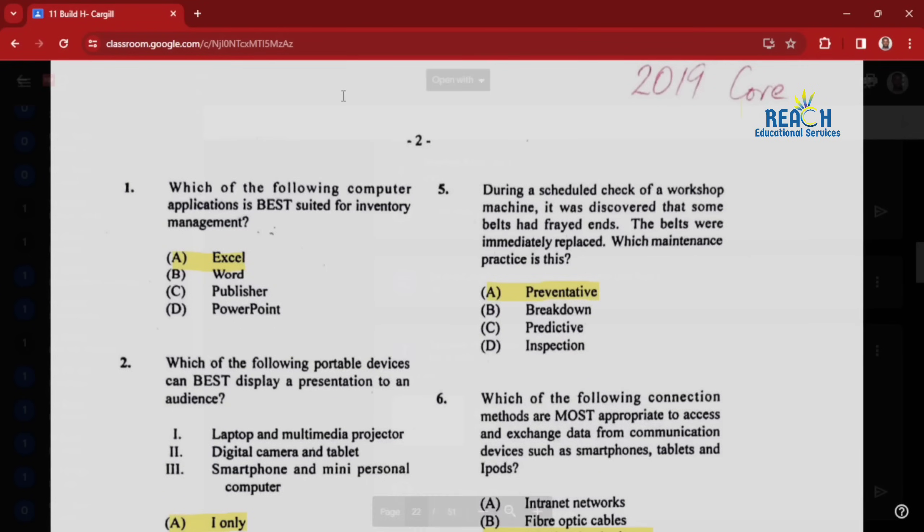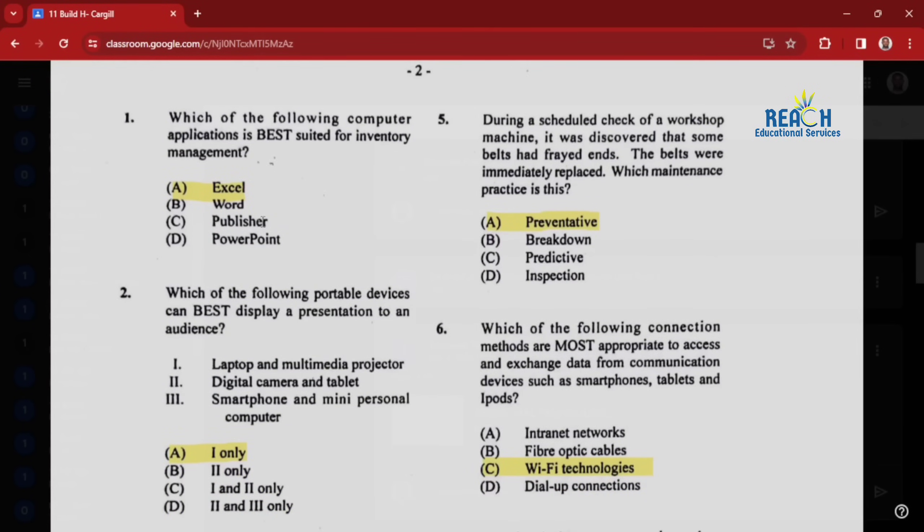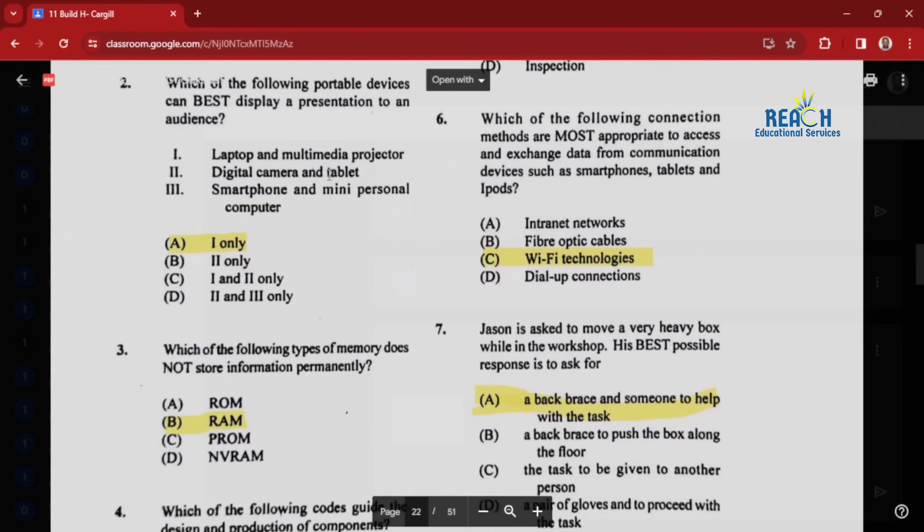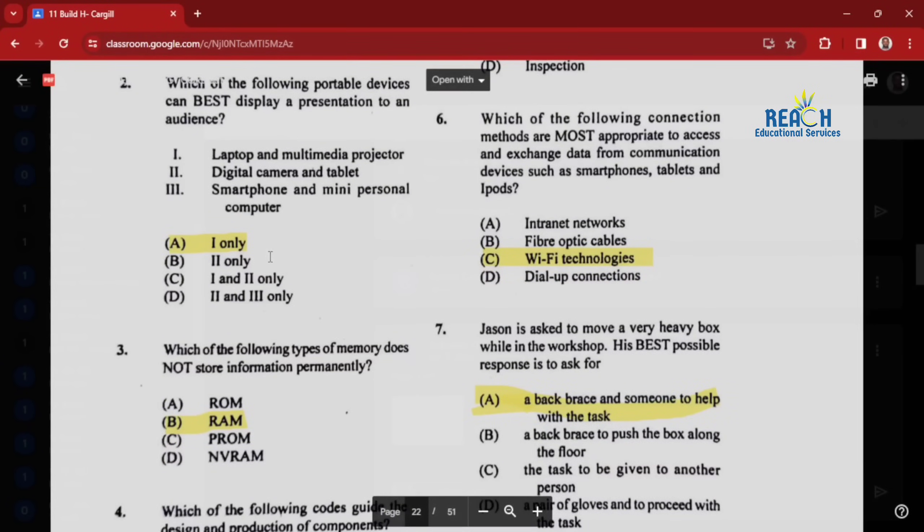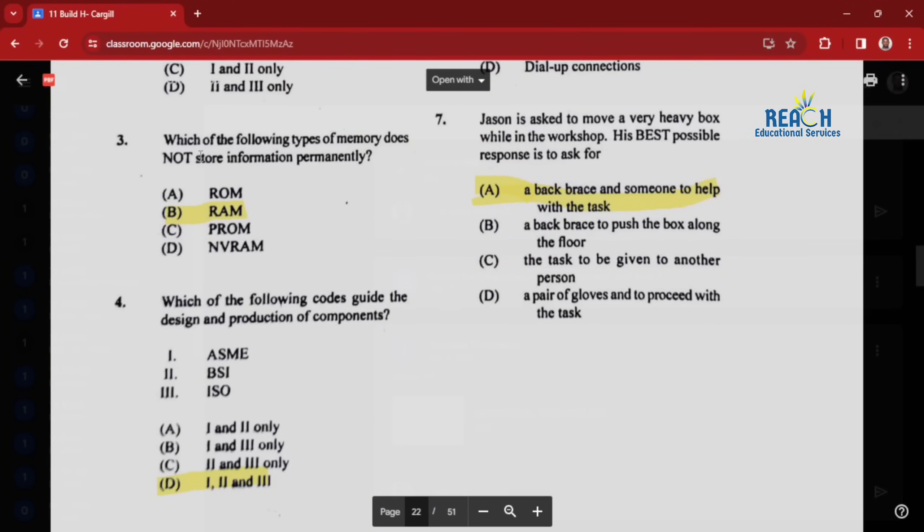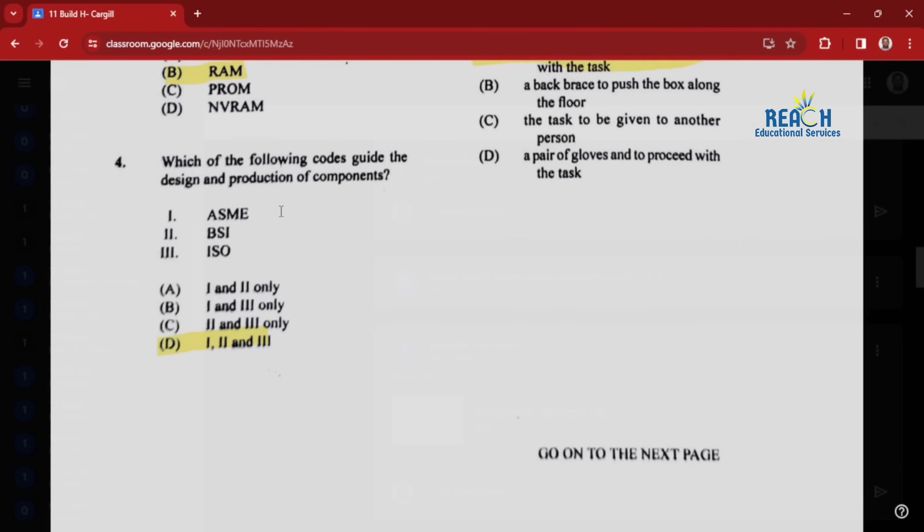Question one: which of the following computer applications is best suited for inventory management? That's Excel. Question two: which of the following portable devices can best display a presentation to an audience? Laptop and multimedia projector, digital camera and tablet, smartphone and mini personal computer - it would be the laptop and multimedia projector. Question three: which type of memory does not store information permanently? That's RAM, random access memory. Question four: which of the following codes guide the design and production of components?